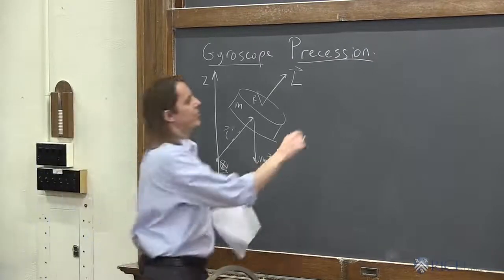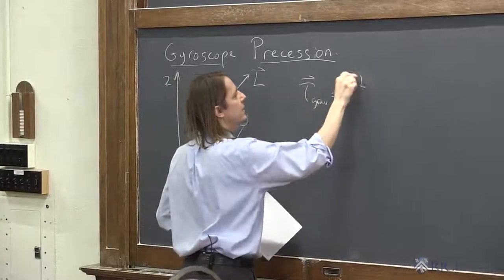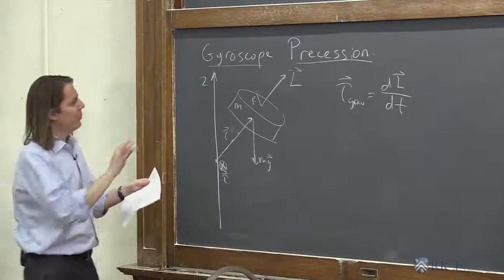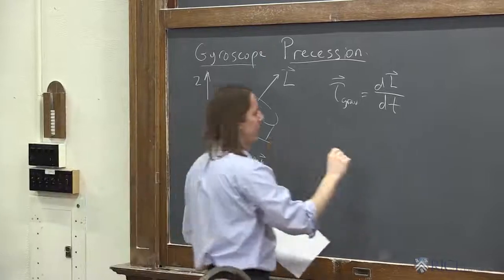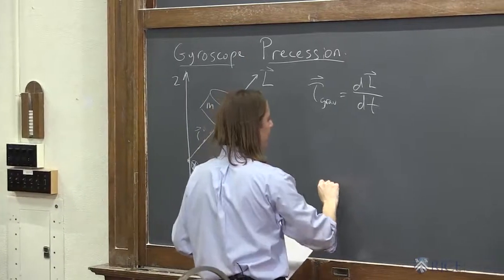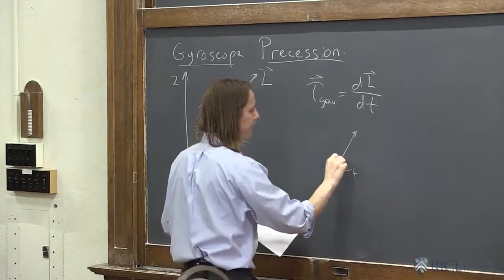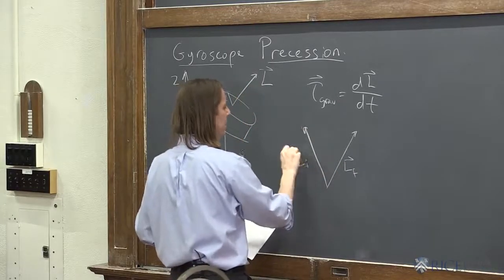So we know that our gravitational torque is dL dt. That's how this all got started. And we know that we were sort of looking down on it this way. So we can draw those vectors. But now we're going to draw them a little different. We know we have an L like this. We could call that L final. And have an L like this. We call that L initial.